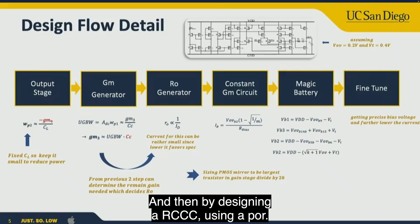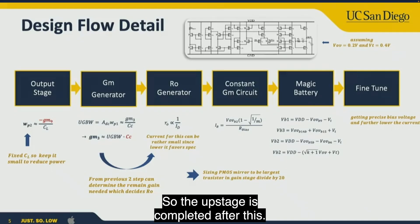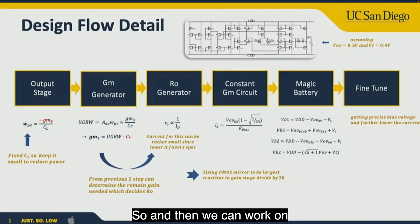By designing an RC-CC network using pole 3, the other stages are completed. Then we work on the folded cascode first stage.